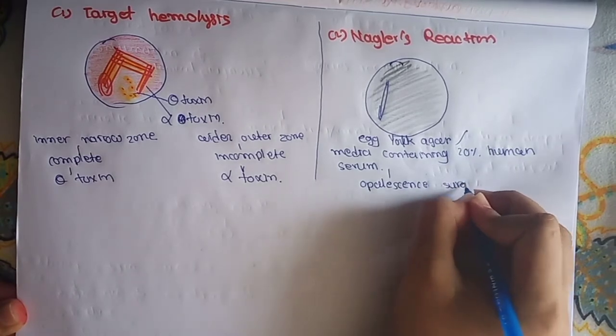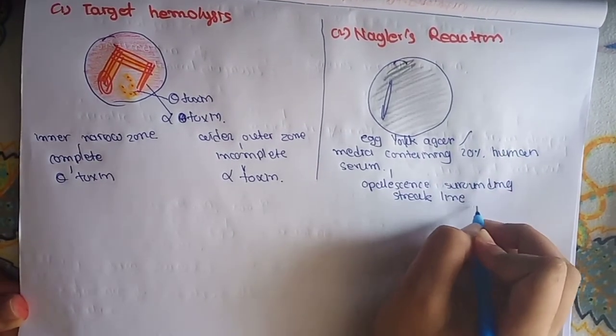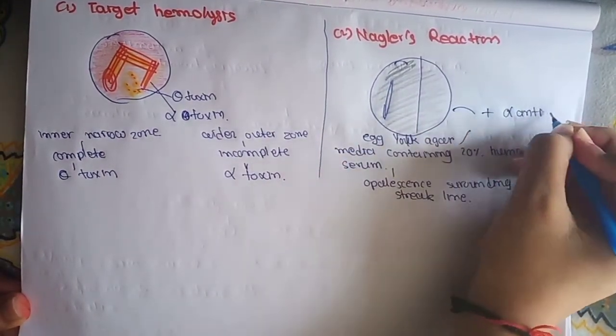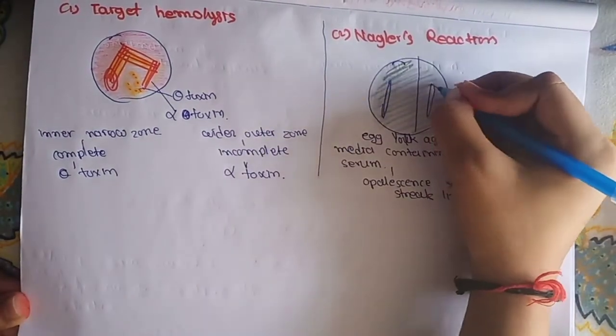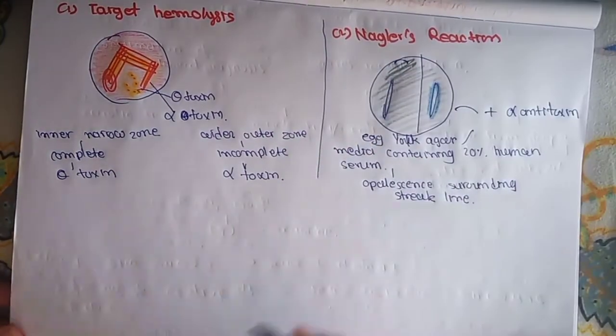What produce? It will produce opalescence surrounding the streak line. But if we add egg yolk agar with antitoxin, then these Clostridium perfringens will not produce opalescence because this opalescence is inhibited by the egg yolk agar with alpha antitoxin.